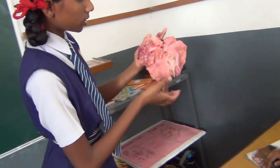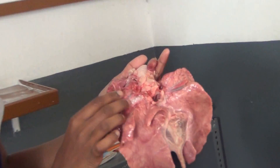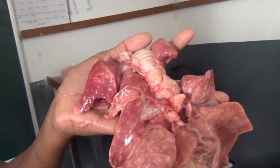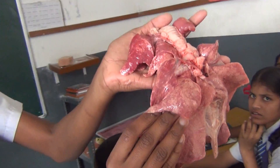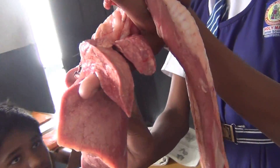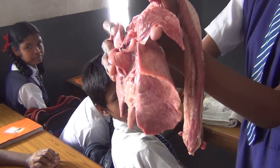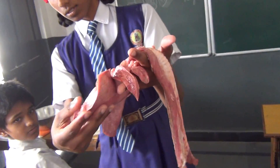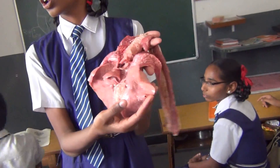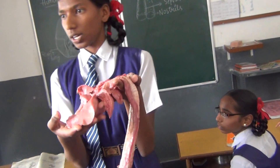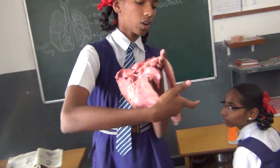This right lung is larger than the left lung and has three lobes. This is the model of the animal lung. Here is the trachea, bronchi, and the bronchi again divide into several branches called bronchioles. And these are the lungs.